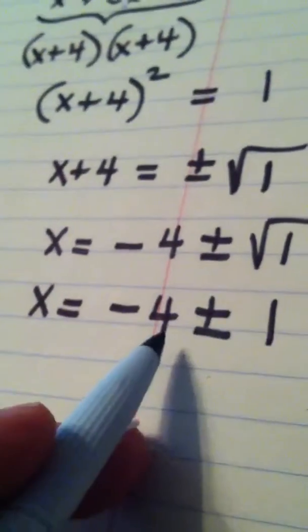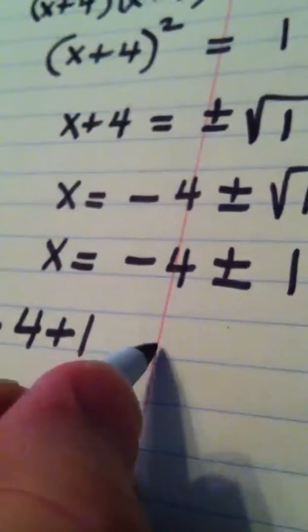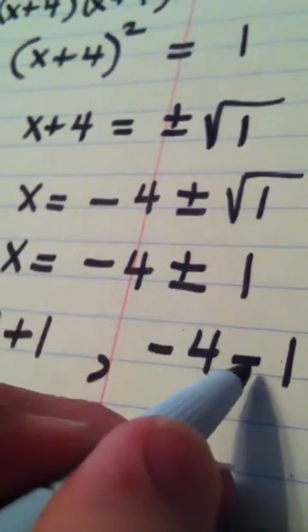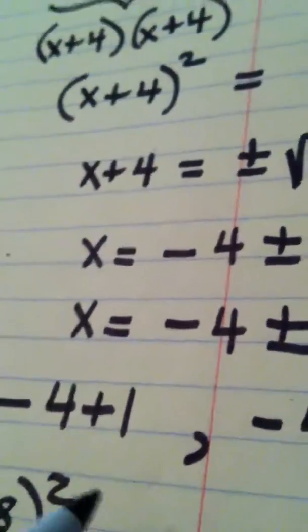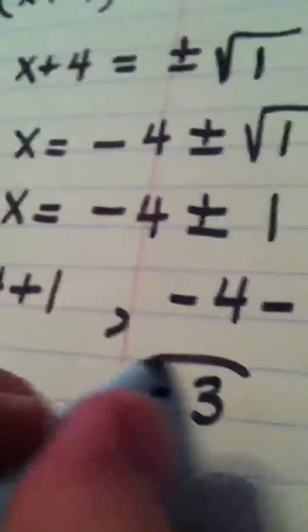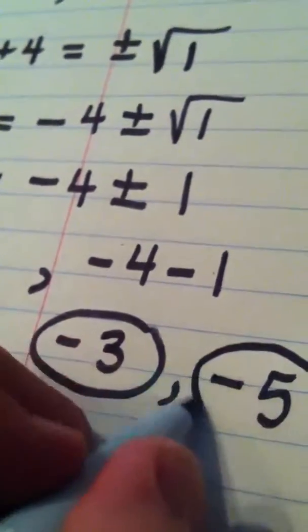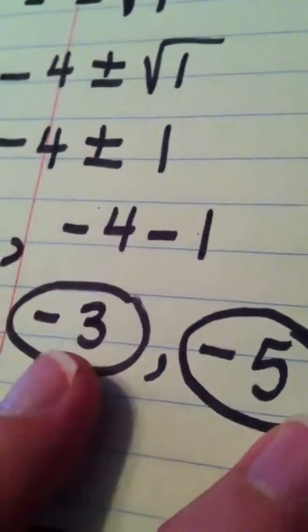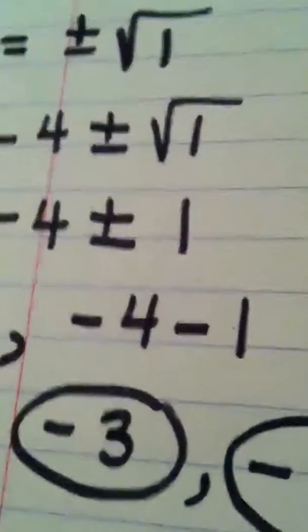We basically have two answers. We have negative 4 plus 1, or we have negative 4 minus 1 — you read this through first as a plus and then as a minus. Negative 4 plus 1 is negative 3, and negative 4 minus 1 is negative 5. So our two solutions to this problem are negative 3 and negative 5, and we accomplished this by using the process of completing the square.